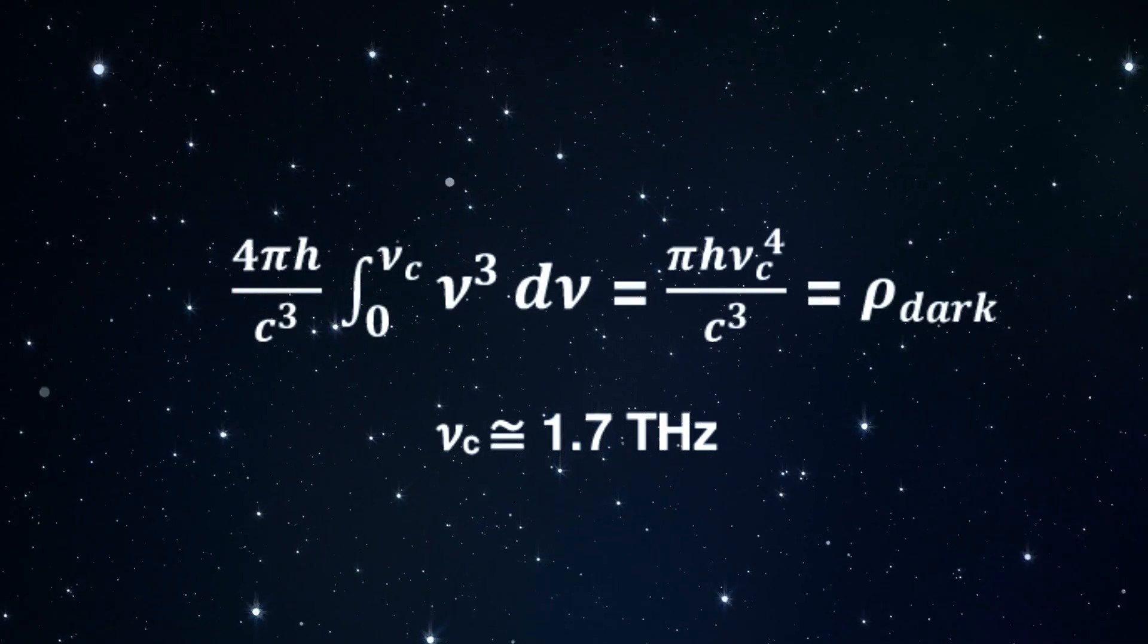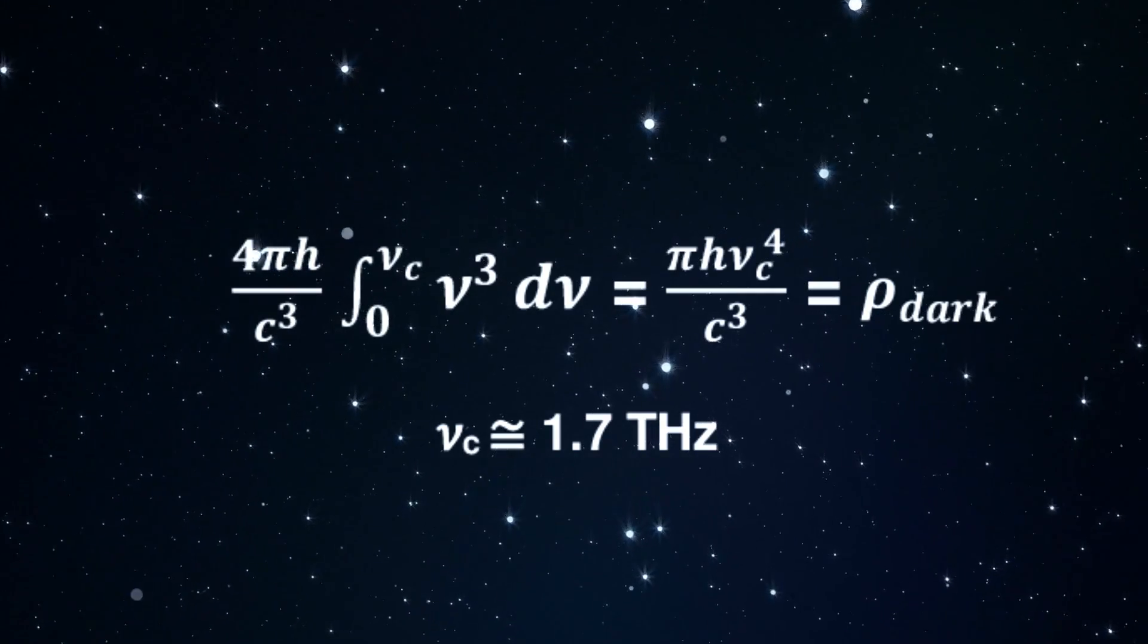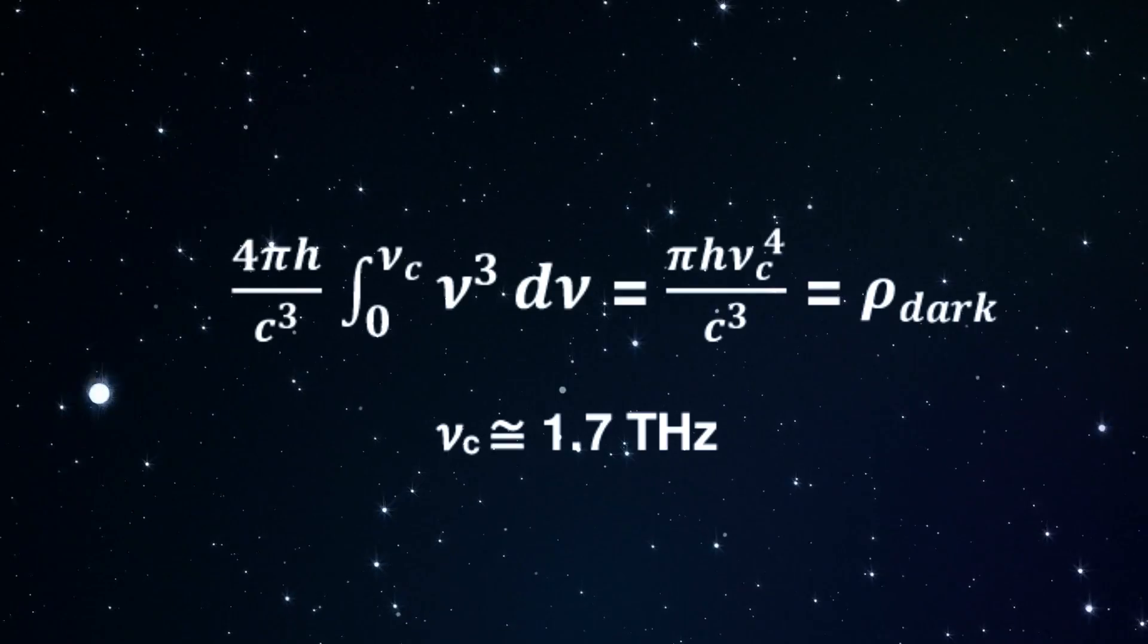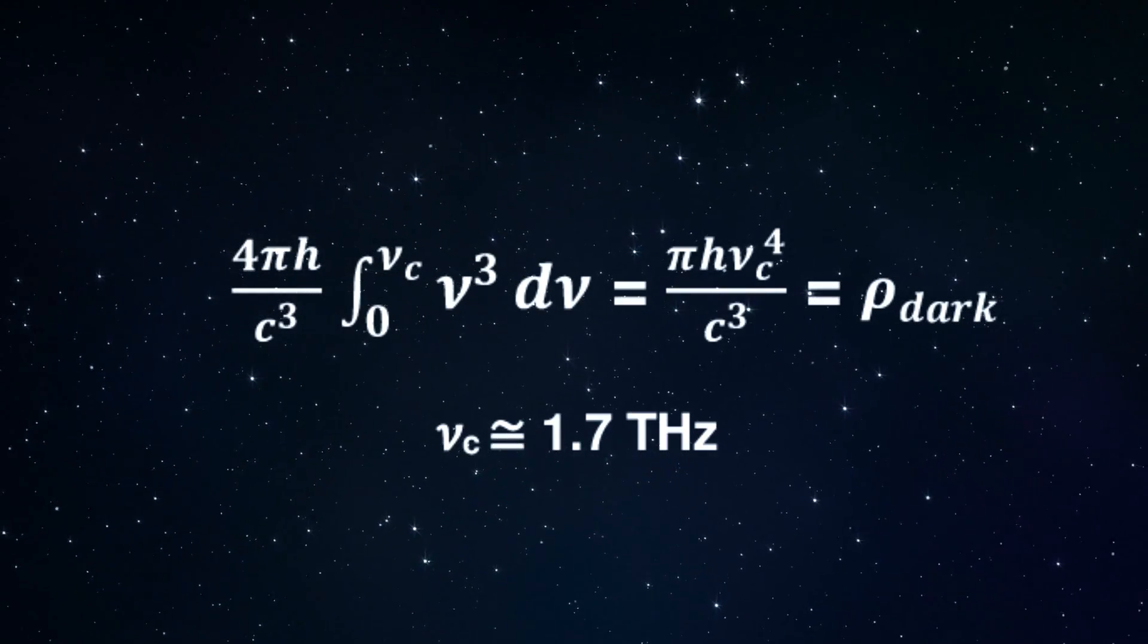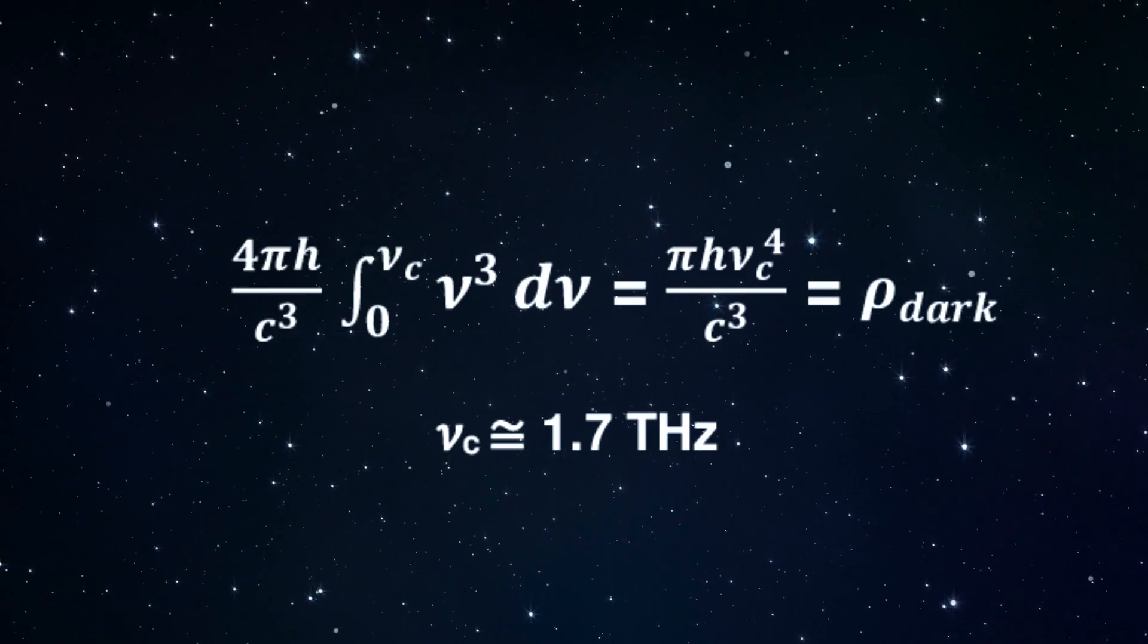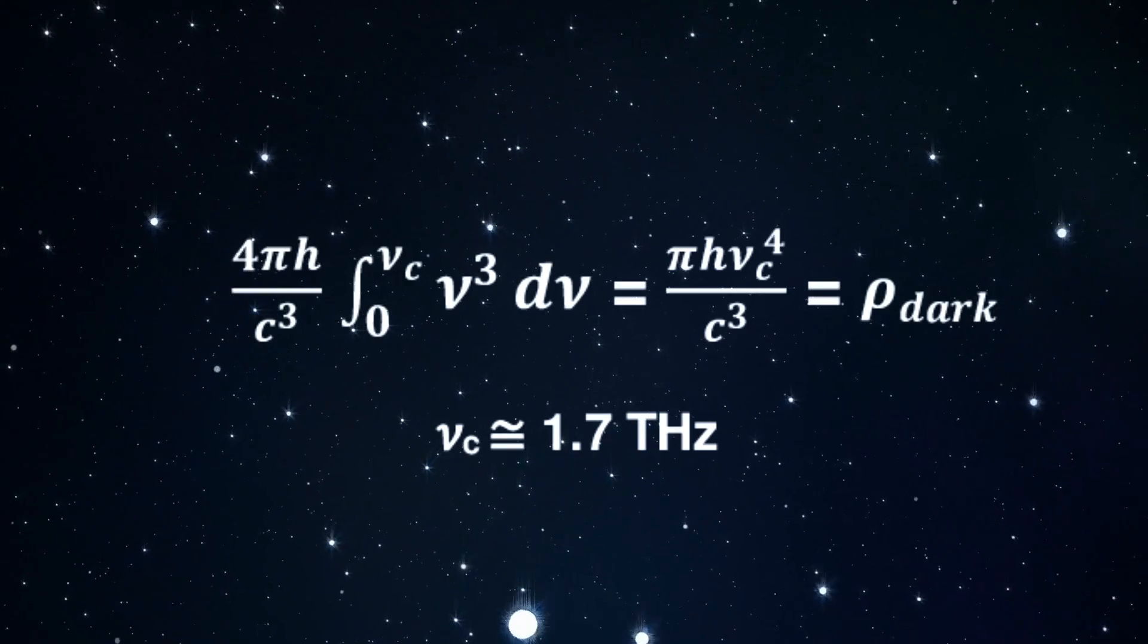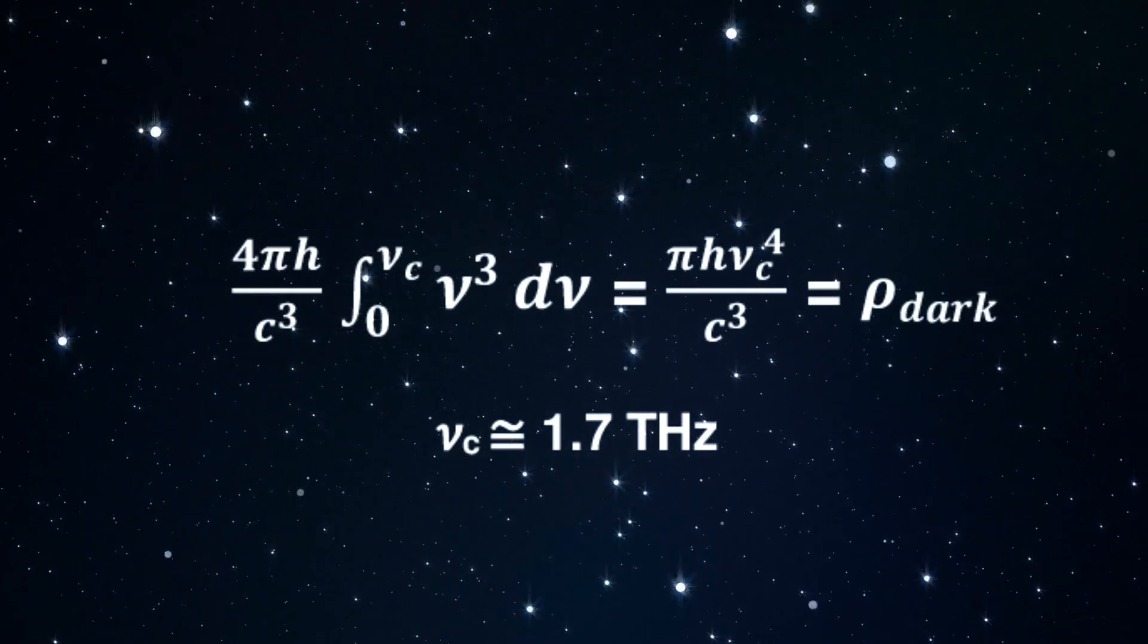This leads to a simple formula for the dark energy density. Nu sub c is the cutoff vibrational frequency of the water nanocluster, H is Planck's constant, and c is the velocity of light in a vacuum. The calculated value of 1.7 Terahertz for the dodecahedral water nanocluster produces the observed small dark energy density.